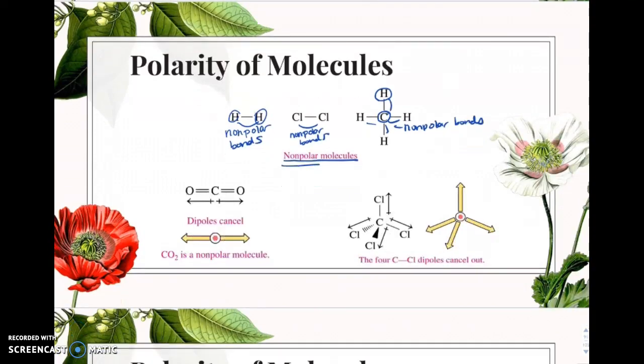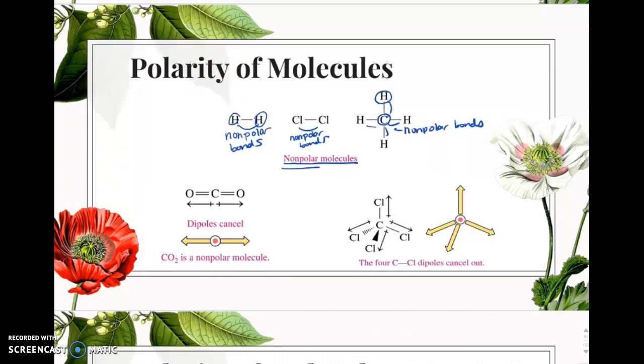Now, if you have polar bonds, you can still have a non-polar molecule. Let's take a look at CO2, carbon dioxide. If you see that carbon dioxide has a polar bond, the CO bond is polar. The dipole shows the oxygen is more electronegative, so it's pulling the electrons, leaving the carbon more positive. But we can see in this drawing that the dipoles are canceling out. They're being pulled in equal and opposite directions.